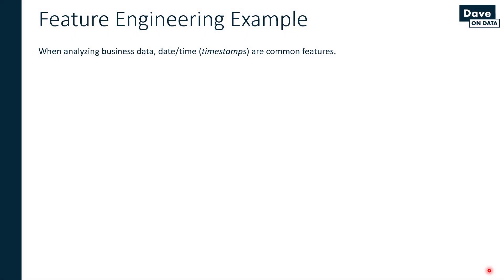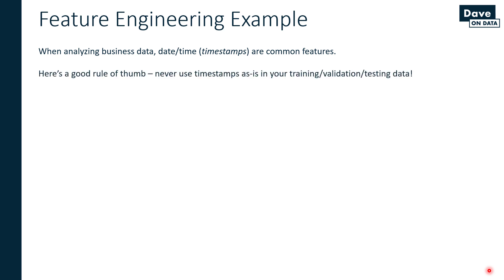When analyzing business data, one of the most common features that you care about relates to dates and times, commonly referred to as timestamps. Almost every business scenario I've ever analyzed in my career as a hands-on analytics professional involved some sort of time aspect. Things happen over time, so you typically analyze over time. When working with timestamp data, here's a good rule of thumb: never use the timestamps as-is in your training, validation, or testing data — you always want to engineer features from the raw timestamps.